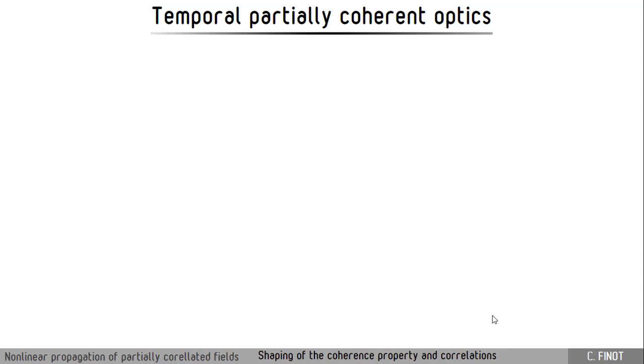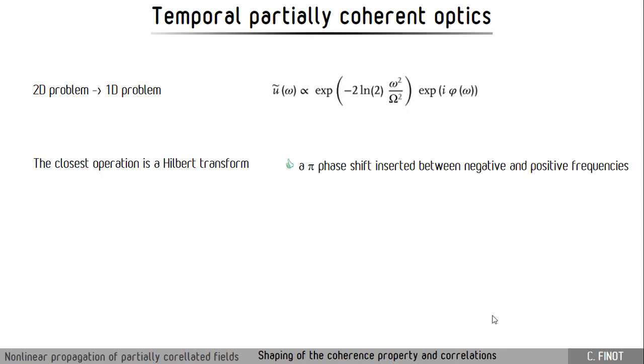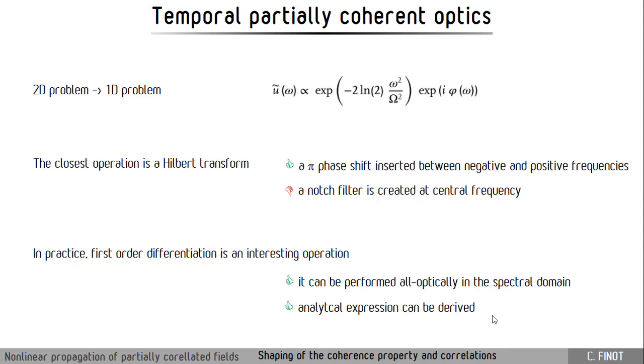We would like to do the same things in the temporal domain. To do this we have to find the equivalence of the spiral phase mask, which will be a Hilbert transform. This transform is quite easy - it's just a phase shift between the negative and positive frequency of the spectrum. But from the practical point of view it is very hard to achieve because it will create a notch filter at the central frequency. So what we have chosen to do is to use instead of a Hilbert transform a first order differentiation. It can be done all optically in the spectral domain, and there is another advantage: we can derive some analytical expression for the different quantities that we would like to measure.